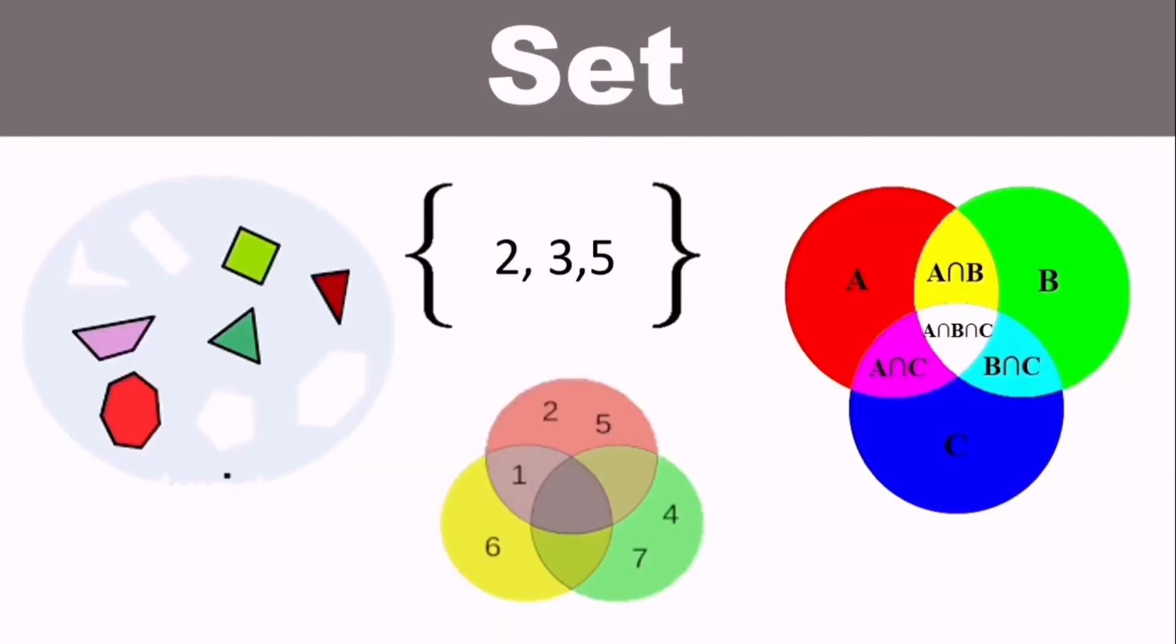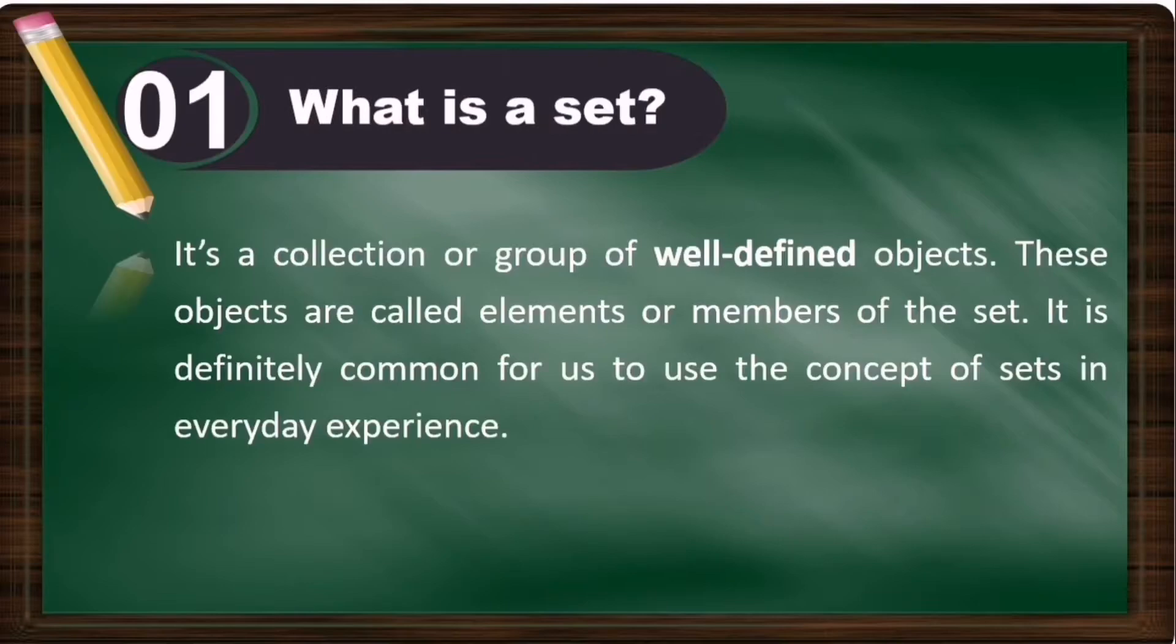So what is set? Set is a collection or group of well-defined objects. These objects are called elements or members of the set. Elements are the objects in a set.